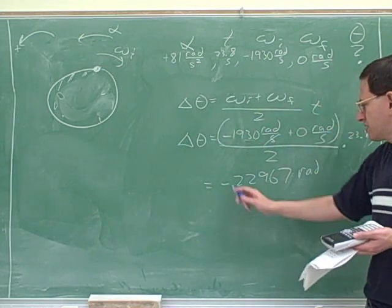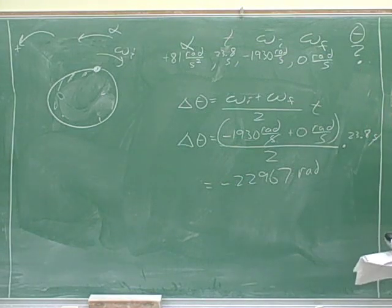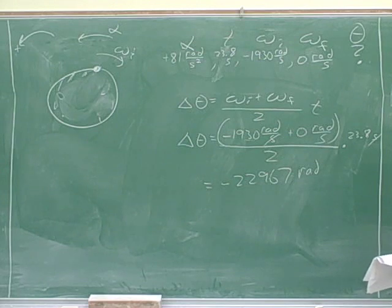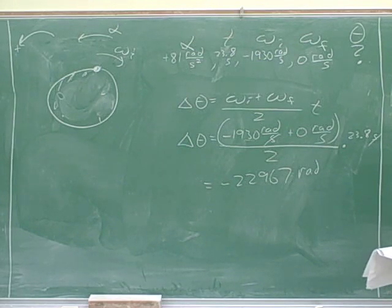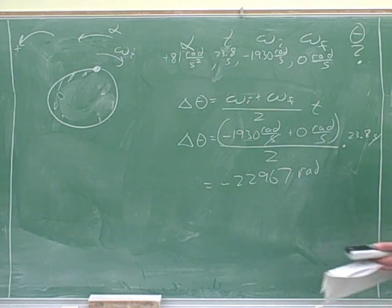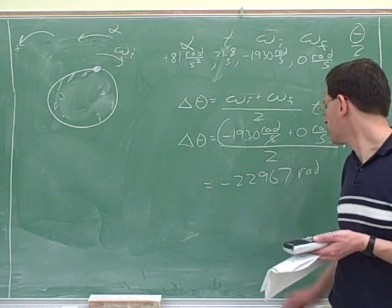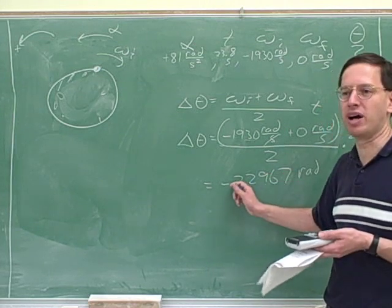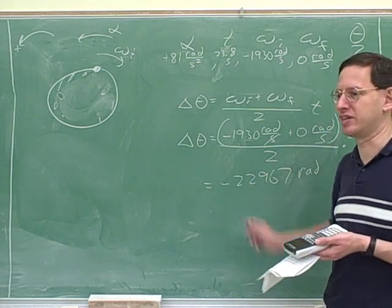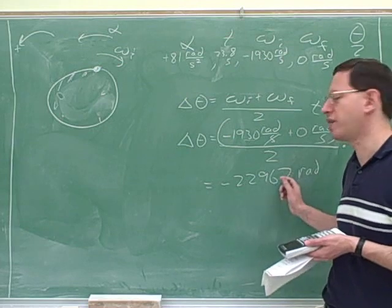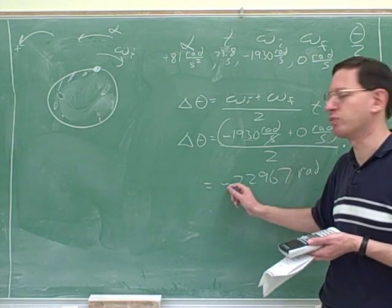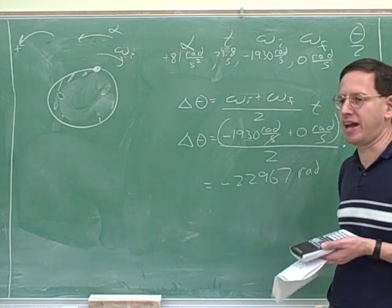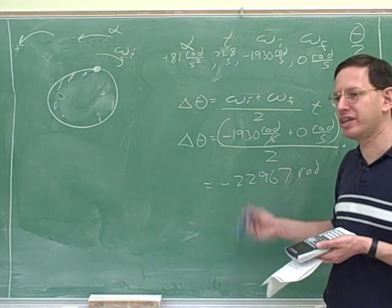Good. What is the significance of this negative sign? What does that mean? Because our positive is in the opposite direction. Good. We can be a little more explicit here. What this means is that we rotated 22,967 radians clockwise. A negative sign tells us not just how many radians we rotated but what direction. And now we can check whether that is right — are we really rotating clockwise? Yes.